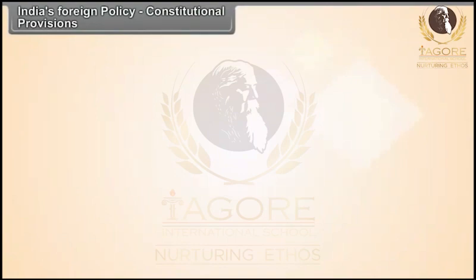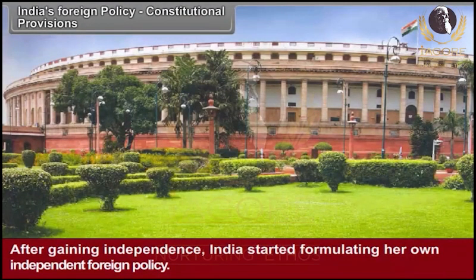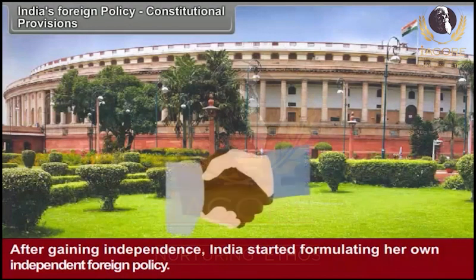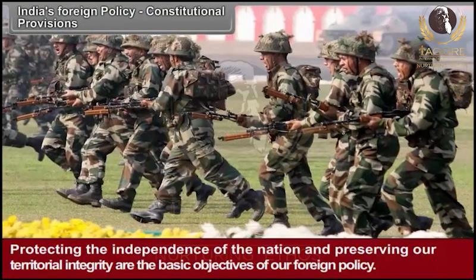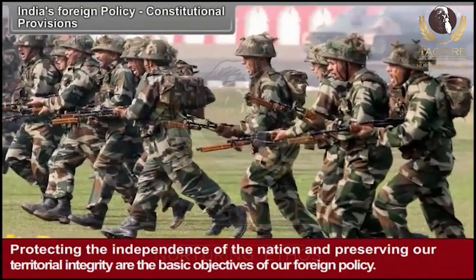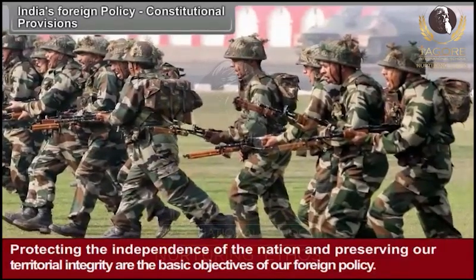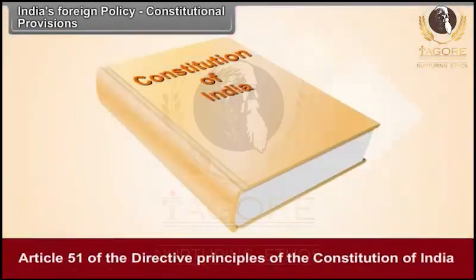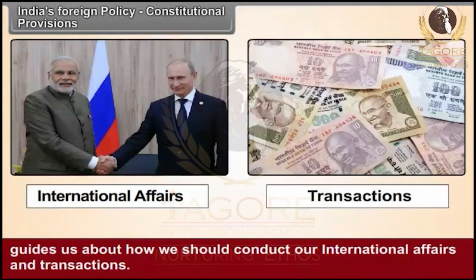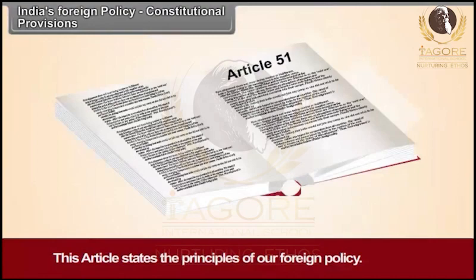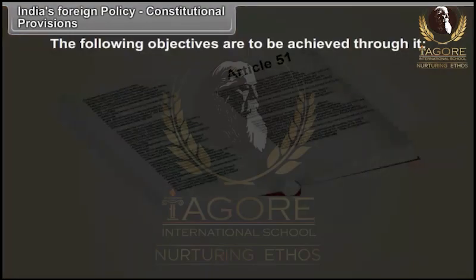Constitutional Provisions: After gaining independence, India started formulating her own independent foreign policy. Protecting the independence of the nation and preserving our territorial integrity are the basic objectives of our foreign policy. Article 51 of the Directive Principles of the Constitution of India guides us about how we should conduct our international affairs and transactions. This article states the principles of our foreign policy, and the following objectives are to be achieved through it.